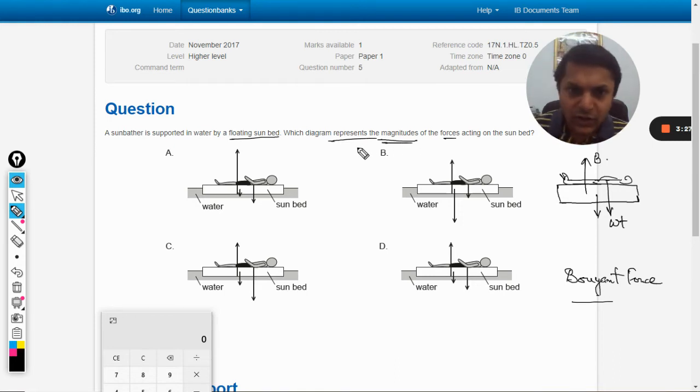In the B option, this force is equal to this force. These are equal and opposite forces. So if they are equal to each other, then this force is not being balanced, so I think B option should be wrong.